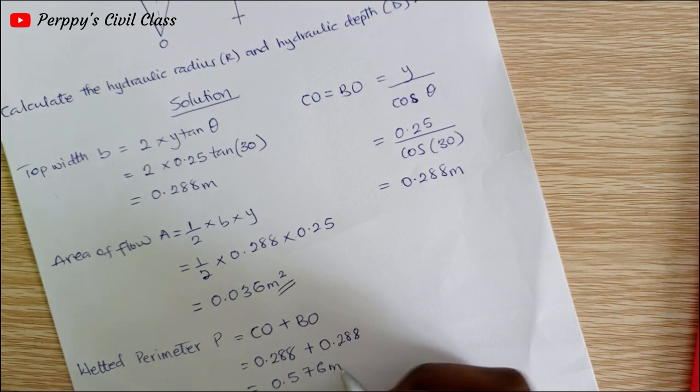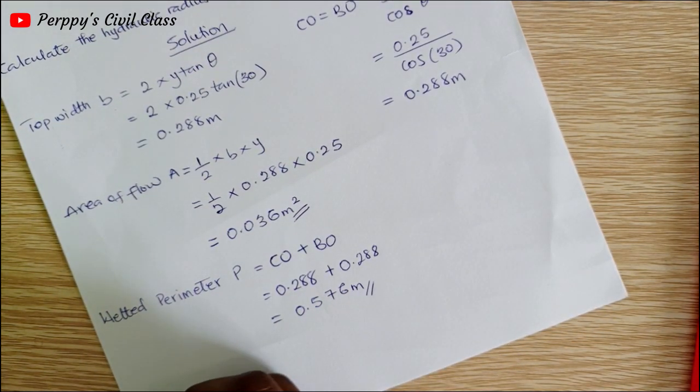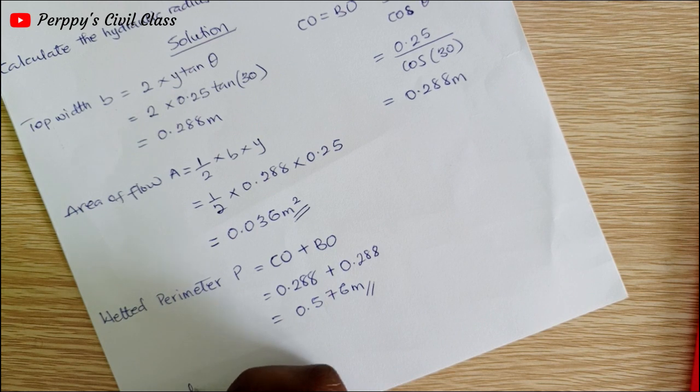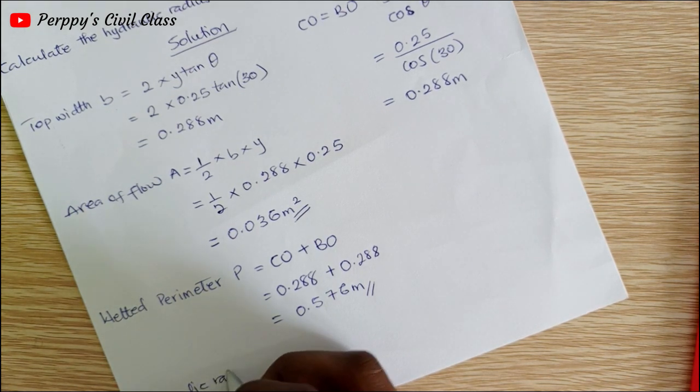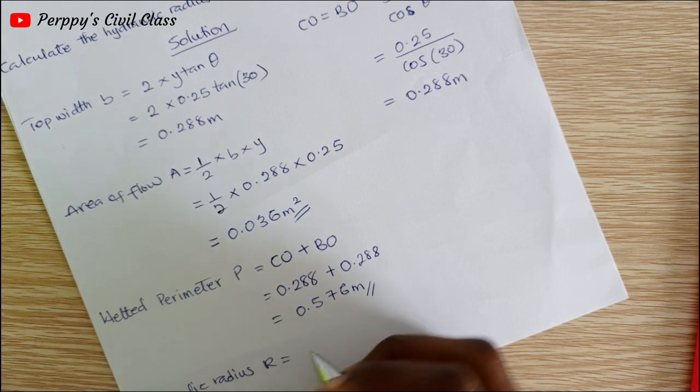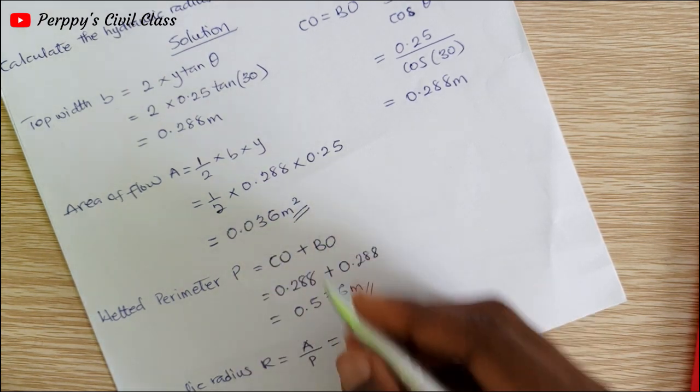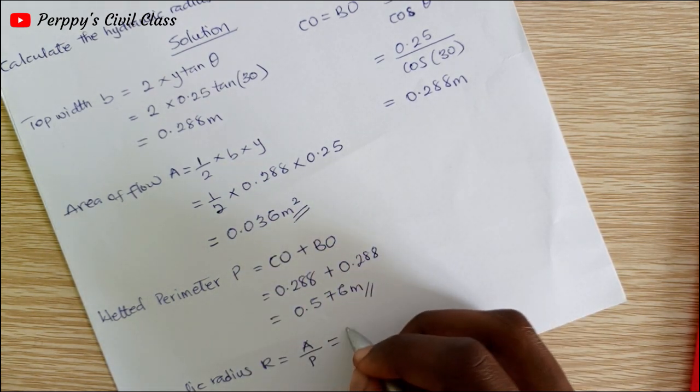Now we can calculate for our hydraulic radius R. Hydraulic radius R is equal to area of flow divided by wetted perimeter.